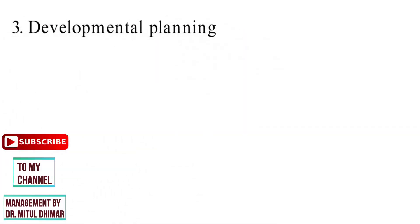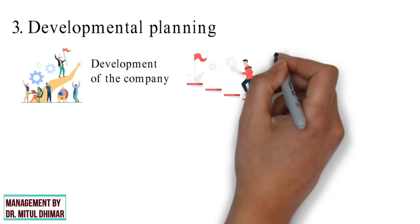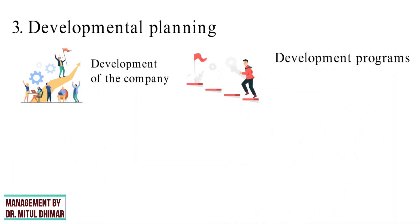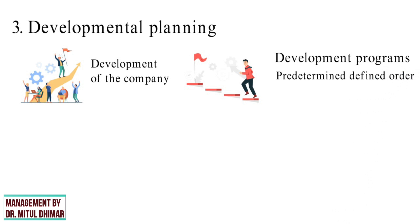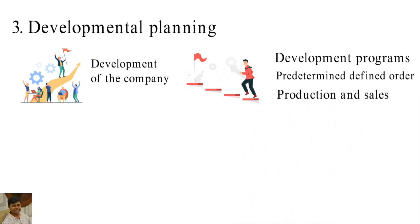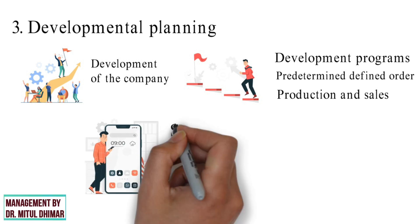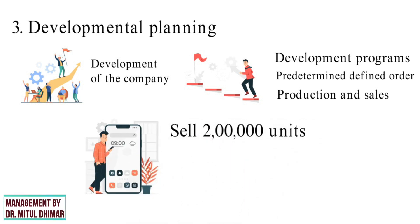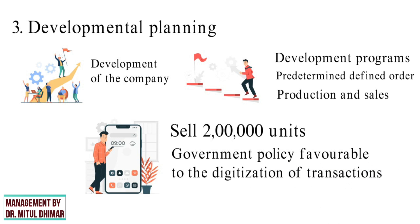Developmental planning aims at the development of the company. To achieve this goal, several developmental programs are prepared so that various functions are performed in a predetermined defined order. This type of planning is mainly concerned with production and sales. For example, a mobile company sets a goal to sell 2 lakh units based on forecasts made from government policy favorable to the industry.